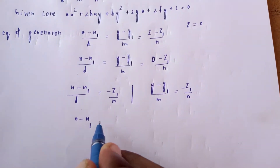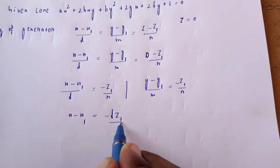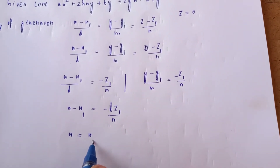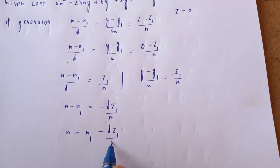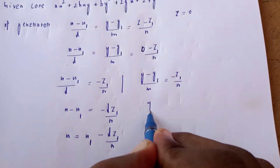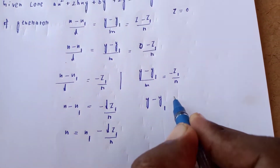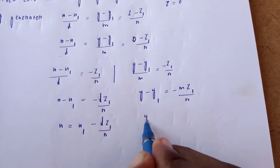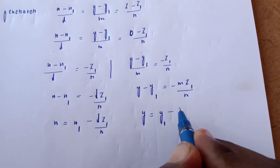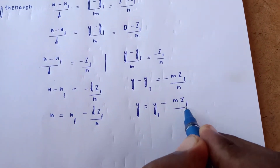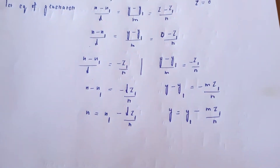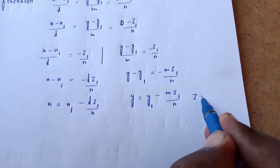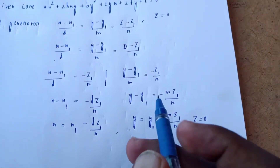When z = 0, from the generator equation we get x = x1 - lz1/n and y = y1 - mz1/n. Substituting z = 0 into the generator gives us these expressions for x and y.